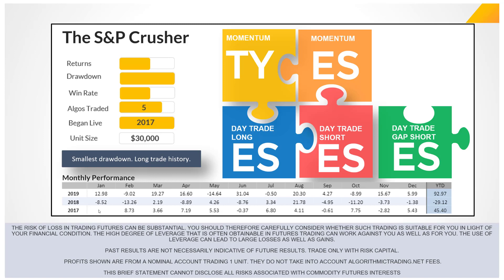The Crusher has been trading live since February 2017. When it first started, it actually had seven algorithms — the five I just showed you plus two more: options algorithms called the Covered Call algo and the Iron Condor. Those were two options algos we used to offer. The Crusher traded seven algorithms in 2017 and part of 2018, but I ended up dropping the options algorithms. They never performed as well as I thought they should in back testing, so I stopped offering them.